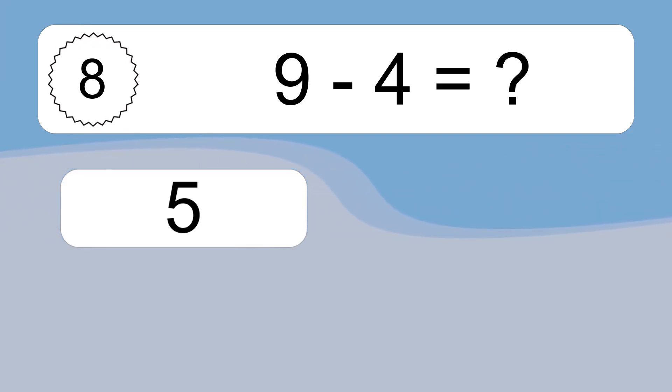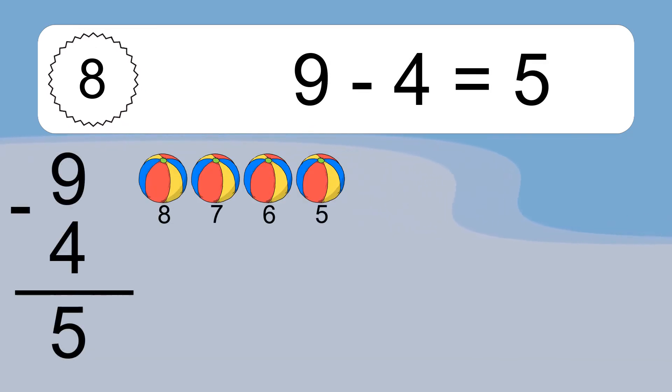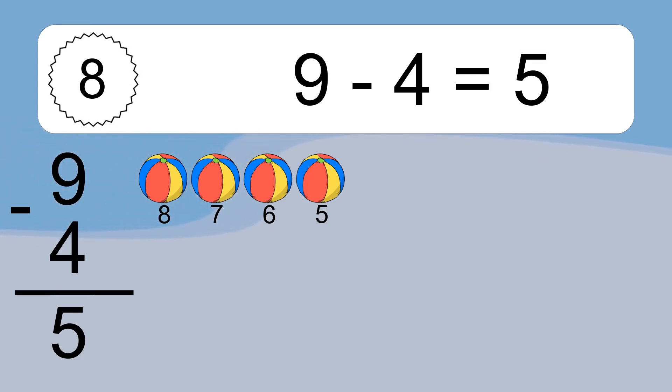9 minus 4 equals what? 9 minus 4 equals 5. Let's count it: 8, 7, 6, 5.